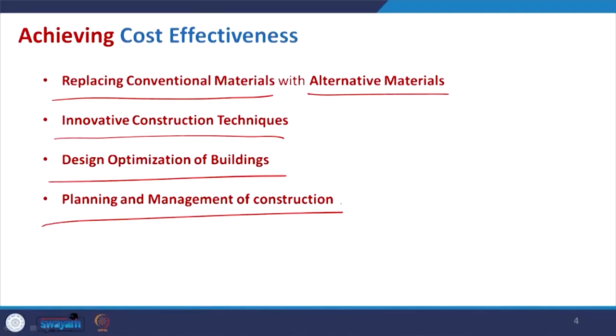The fourth point is planning and management of construction. Even if you have very good drawings — very well designed and well optimized architectural design — and you have good technology and good materials, but in the management when you are implementing it on site there is some mismanagement, then there will not be a good flow of when materials are to be procured and cured. Proper management also influences the cost effectiveness of any construction project.